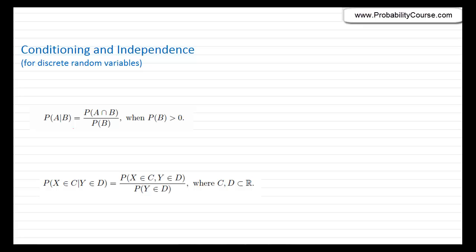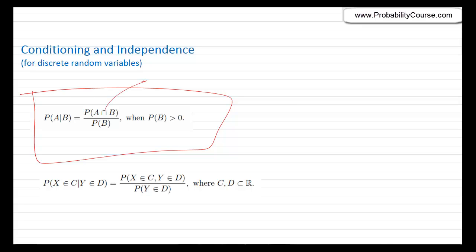Hello. In this video we talk about conditioning and independence for discrete random variables. Remember that the formula for conditional probability is: probability of A given B is equal to probability of A and B divided by probability of B.